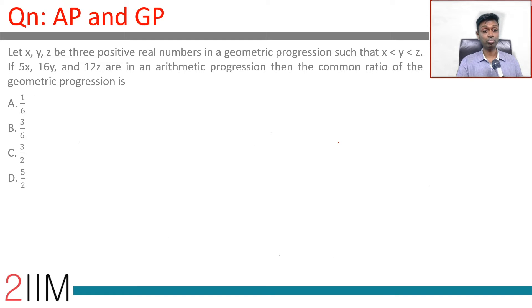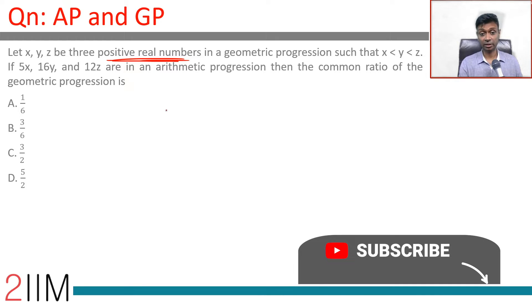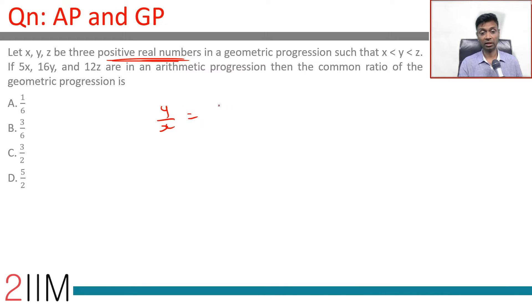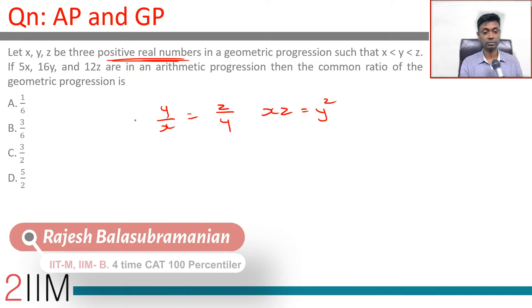Let x, y, z be three positive real numbers in geometric progression — positive real numbers that usually simplify questions. In a geometric progression such that x less than y less than z, y by x equals z by y, so xz equals y squared. This is the common ratio property.